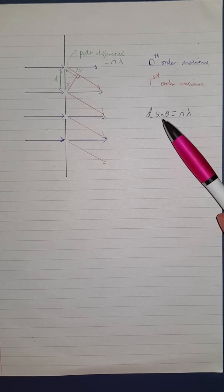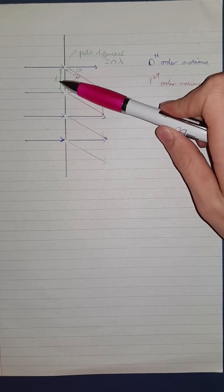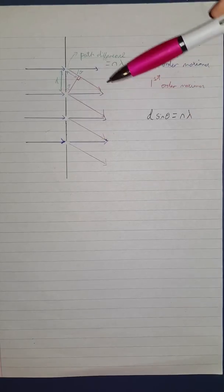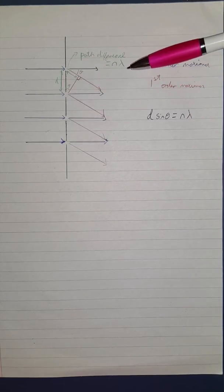To derive this equation, we must look at this triangle here, with d being the distance between the slits, and this angle being the angle the order of maxima makes to the zeroth order of maxima.